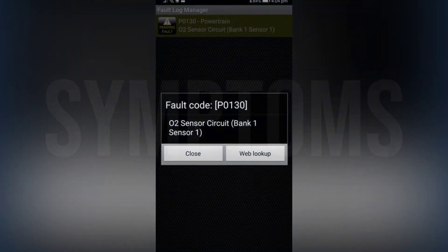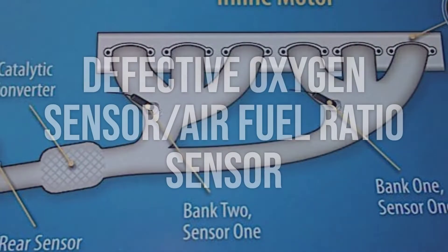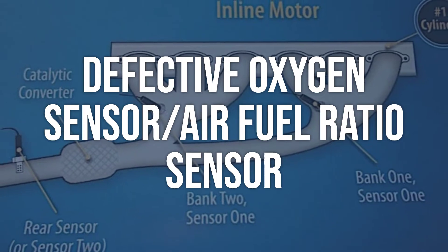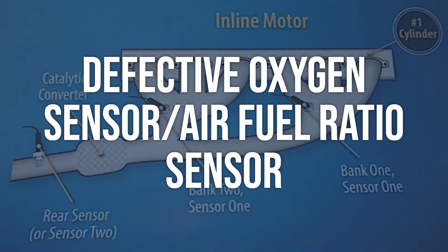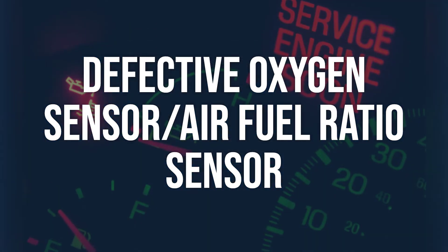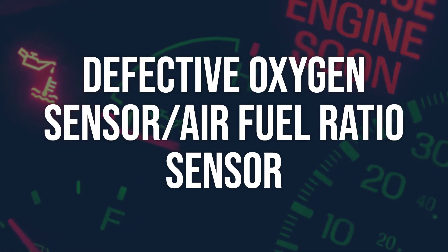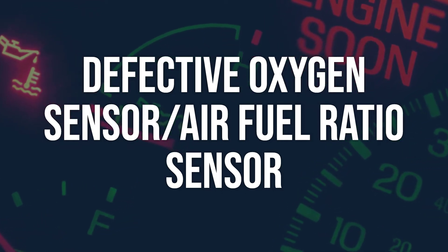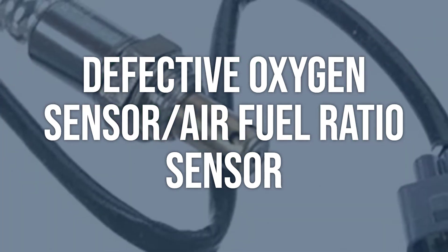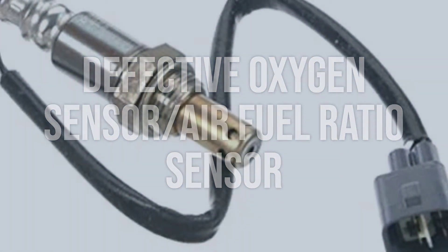Now we talk about possible causes, and how to diagnose and fix. The first cause is a defective oxygen sensor or air-fuel ratio sensor. Use a data streaming scan tool to verify code setting conditions during a test drive. Check for 12-volt heater signals and good grounds to the sensor. Test the resistance of the oxygen sensor heater element and compare it to factory specs. Verify the signal from the oxygen sensor to the PCM. If the sensor is the most likely problem and the code will presumably set again, replace the oxygen sensor.